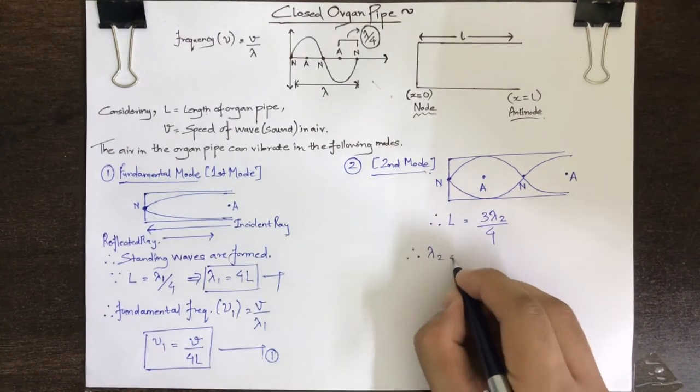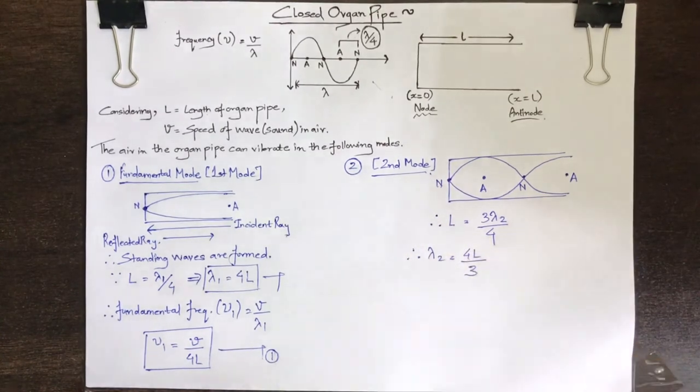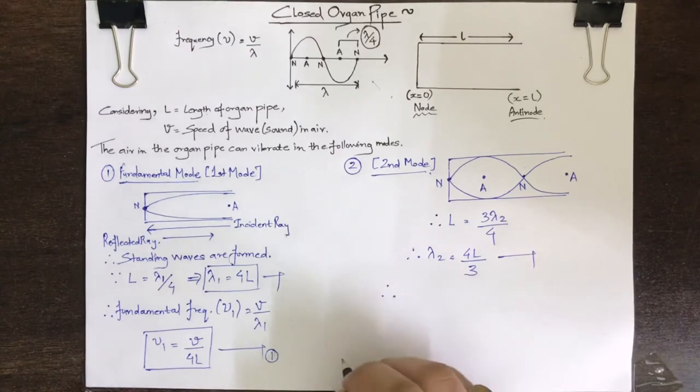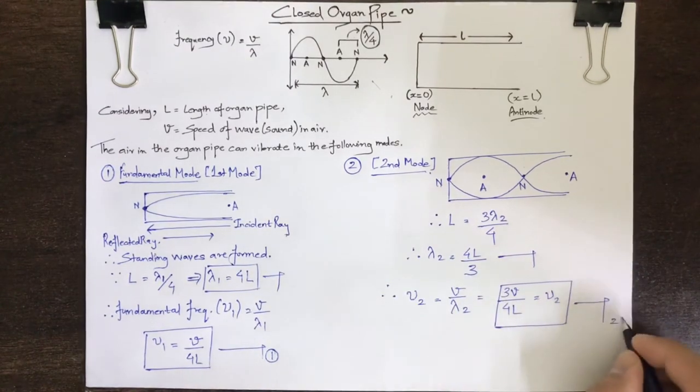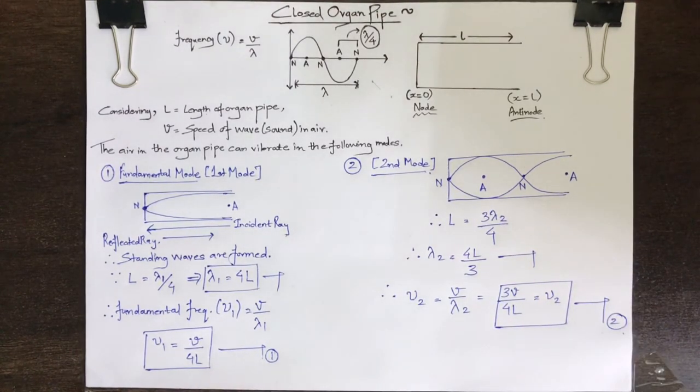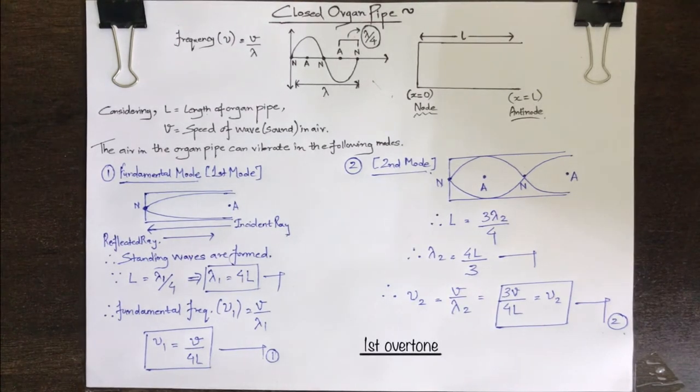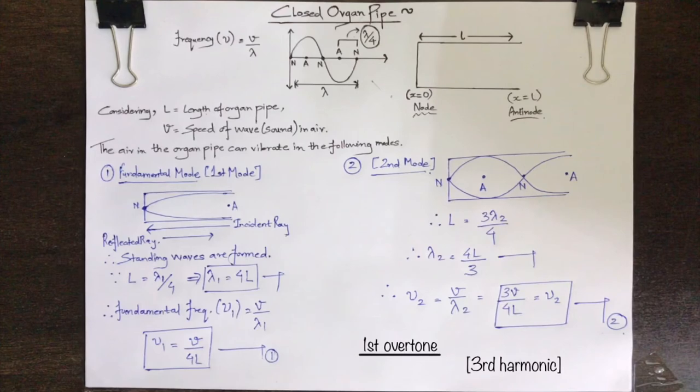Lambda 2 is equal to 4L upon 3, which gives us the value of mu 2 is equal to 3V upon 4L. Thus, the frequency of the vibration in the second mode is three times the fundamental frequency. The sound note produced in the pipe is called first overtone or third harmonic of the pipe.